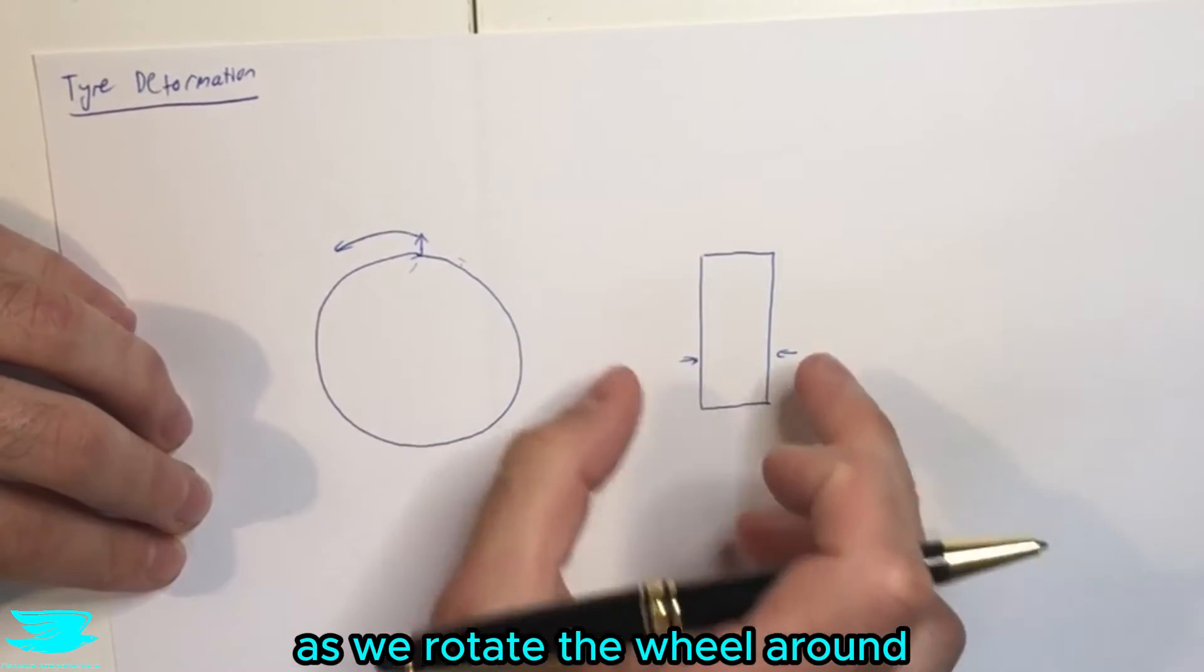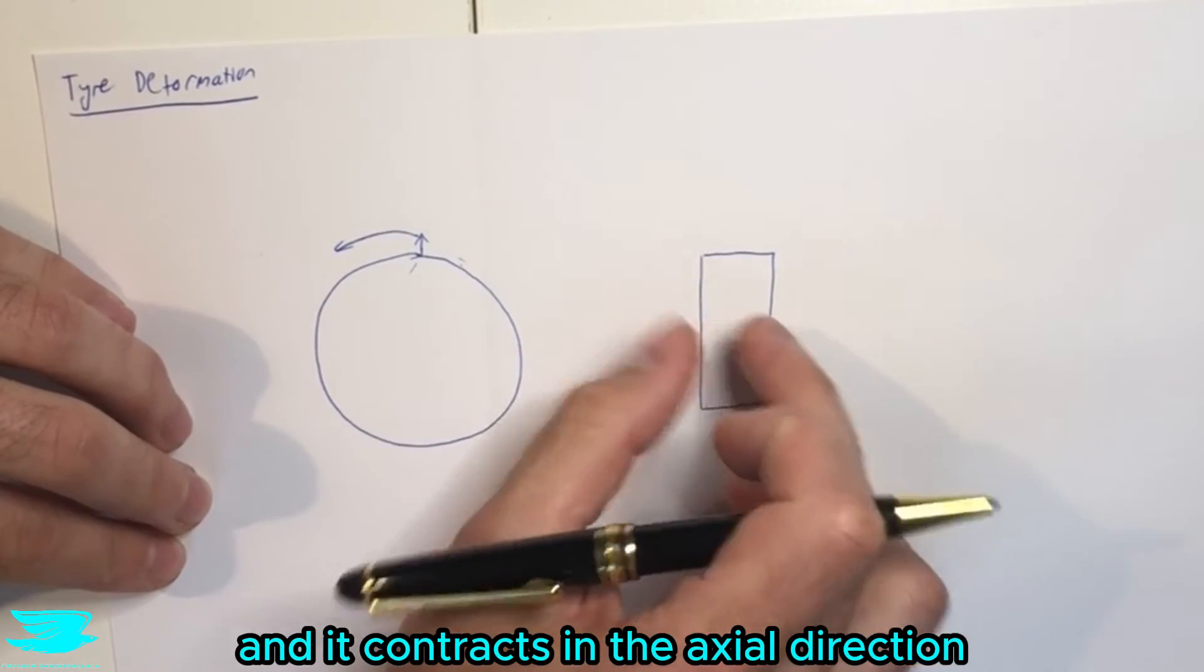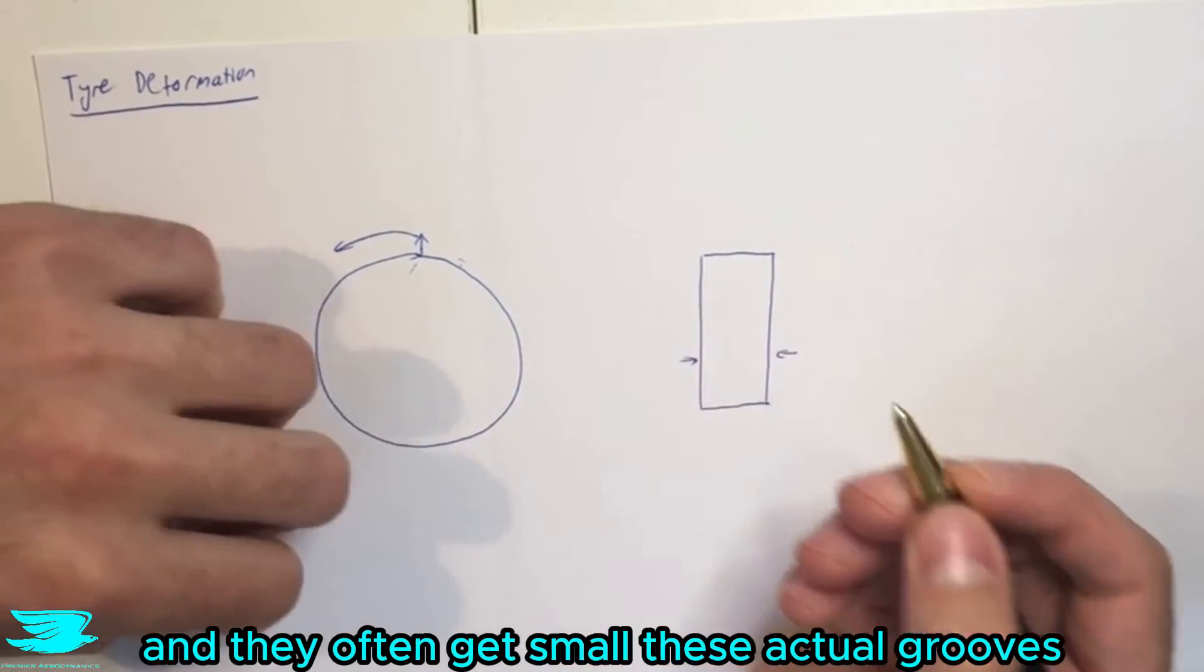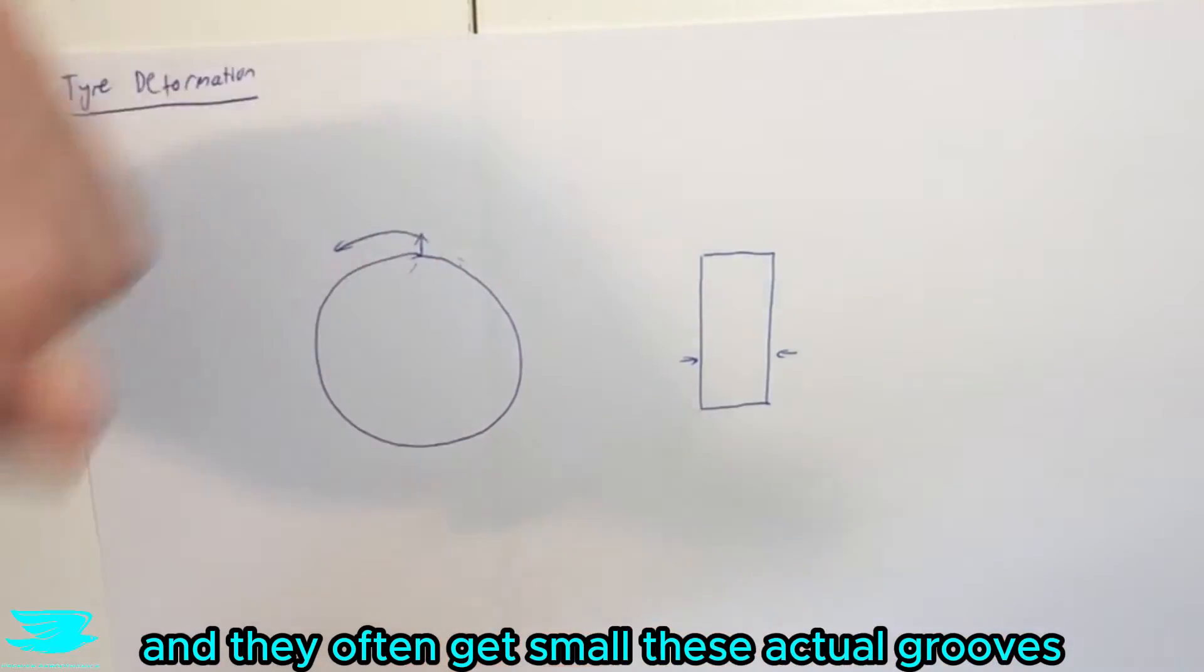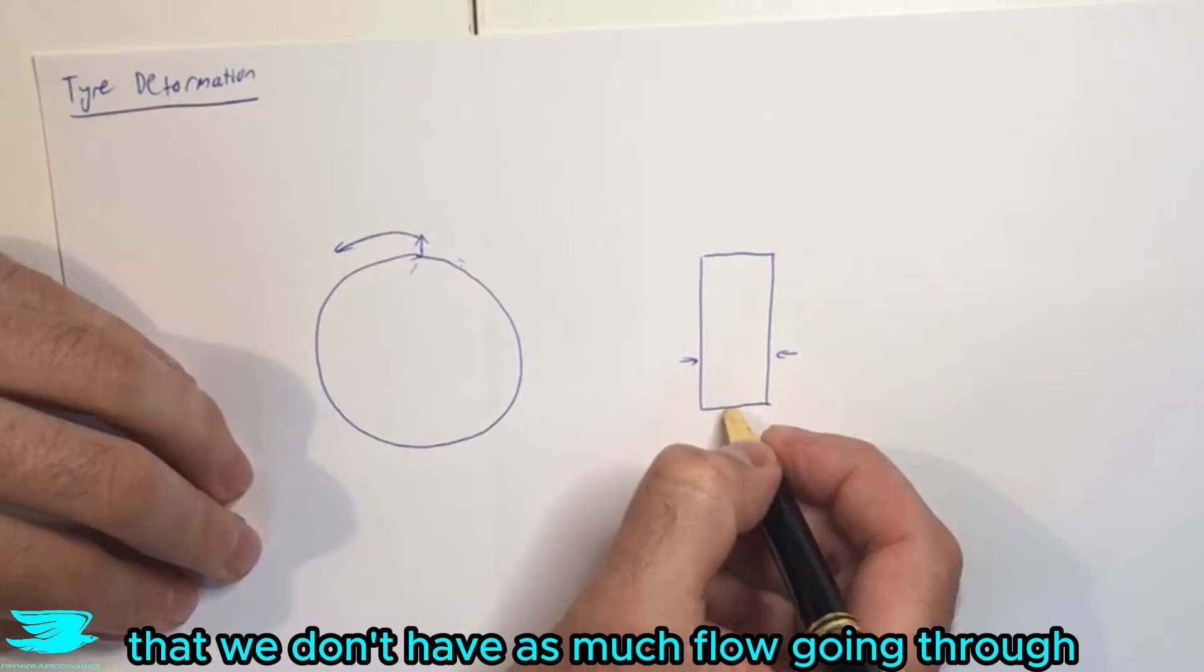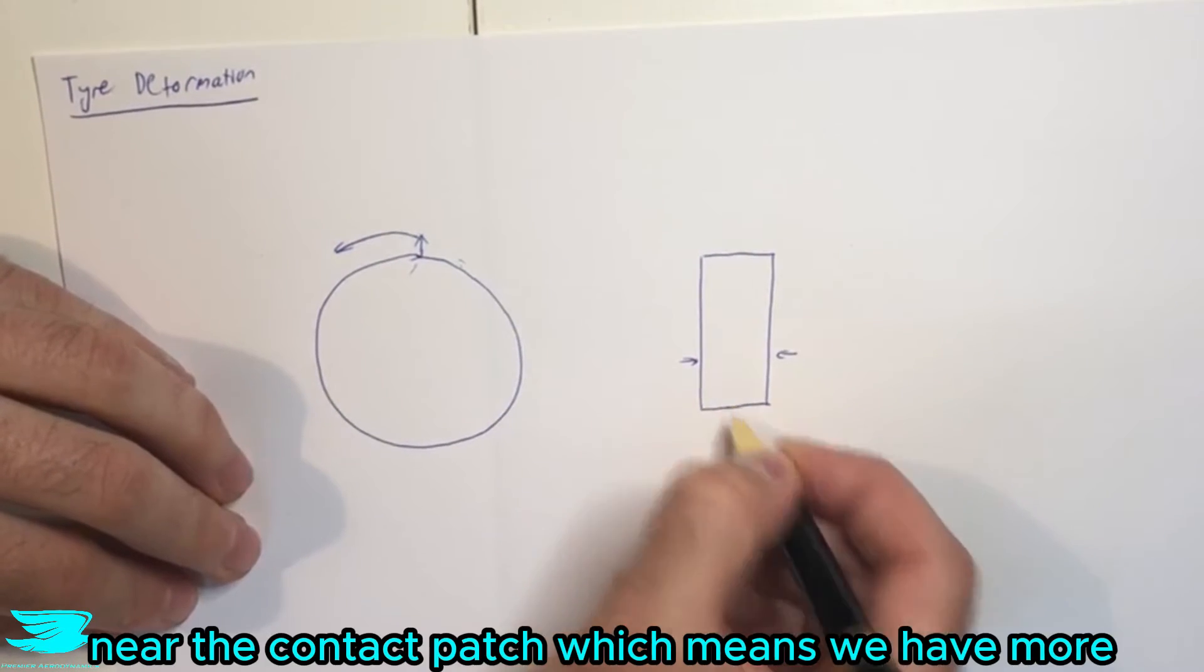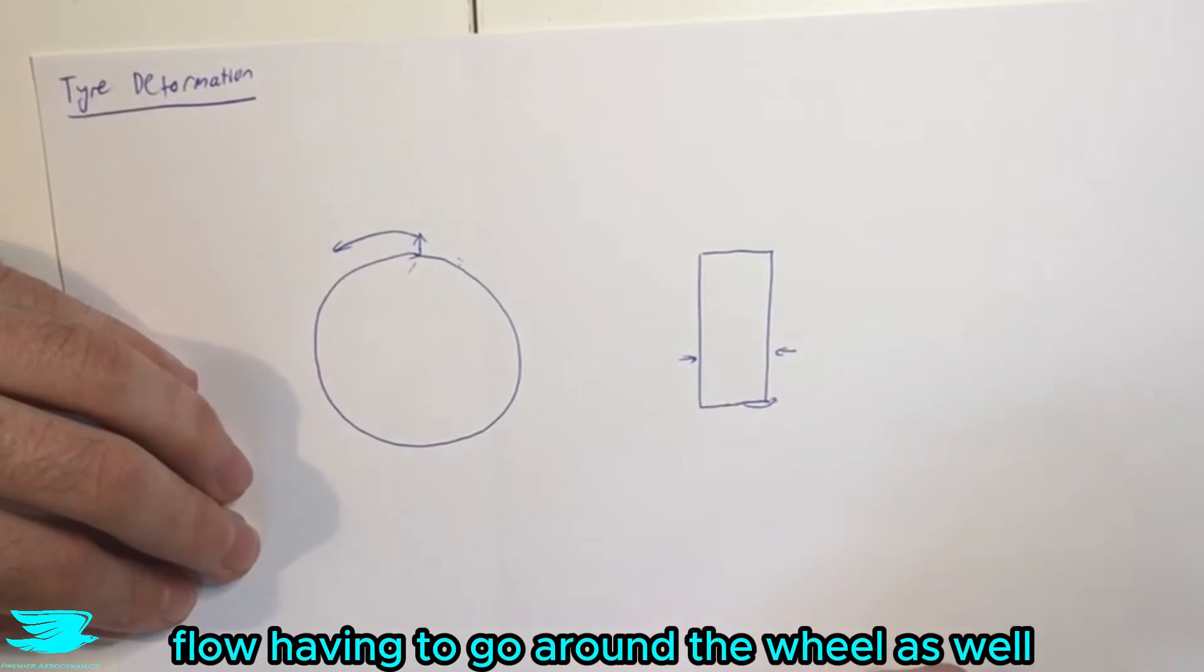as we rotate the wheel around and it contracts in the axle direction, the tire tread gets closer together and they often get smaller, these actual grooves. So that means that we don't have as much flow going through near the contact patch, which means that we have more flow actually having to go around the wheel as well.